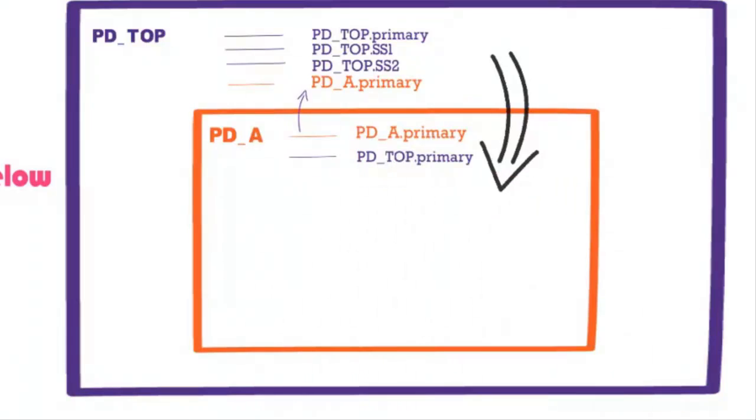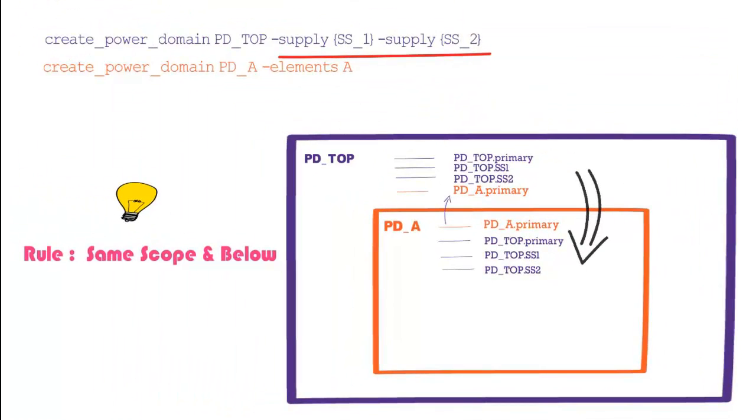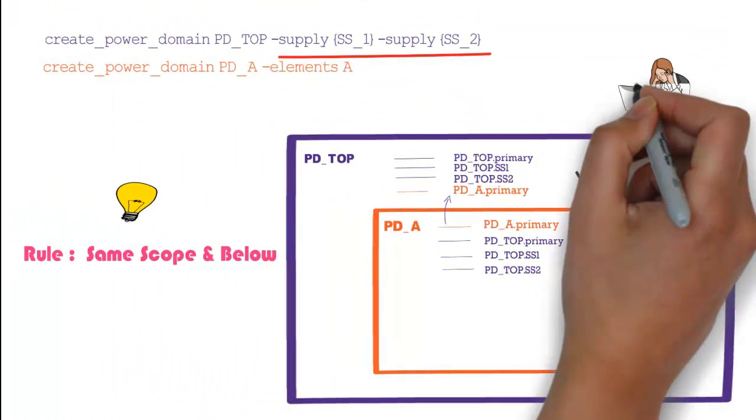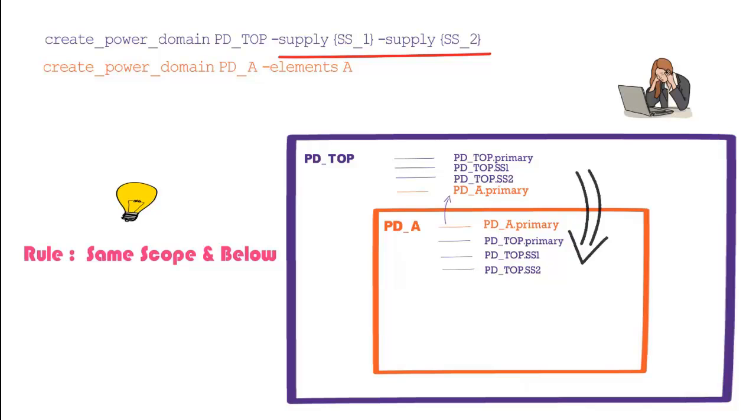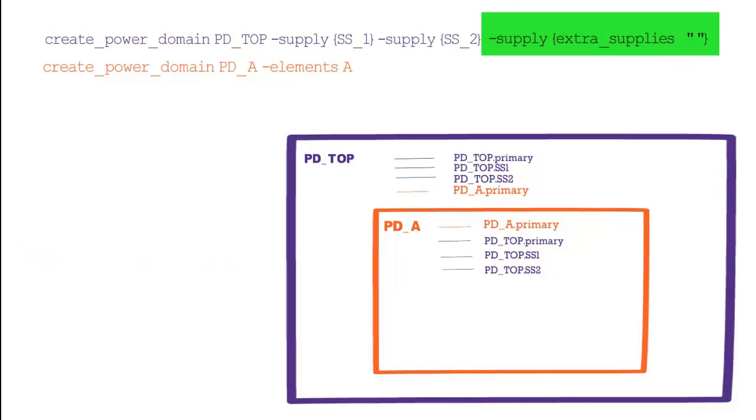Synopsis provides few keywords to control the availability of supply sets. Extra_supplies with empty list as shown will keep only the supply sets of that power domain. Now PD_A.primary is not available in PD_TOP.